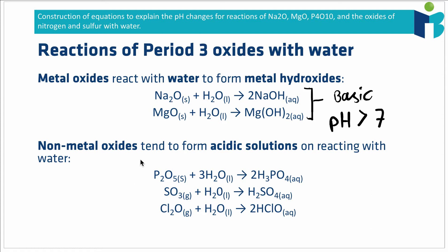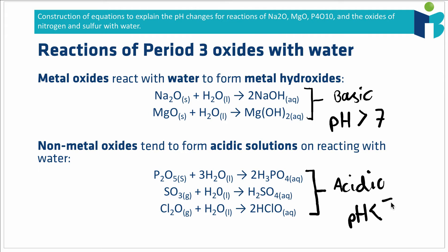Moving over to other constituents of period 3 — phosphorus, sulfur and chlorine — these are examples of non-metal oxides. What we find is that these tend to form acidic solutions when they react with water. In the case of phosphorus oxide P₂O₅ reacting with water we make H₃PO₄, which is phosphoric acid. When reacting sulfur trioxide with water we make sulfuric acid. When we react chlorine oxide with H₂O we make chloric acid. All of these reactions produce acids that are able to release H⁺ ions into solution, so these are all acidic — pH less than 7.